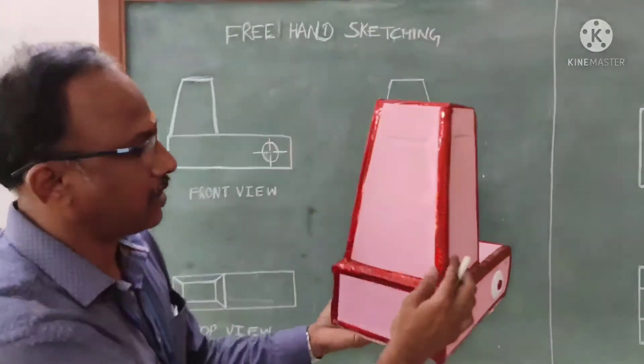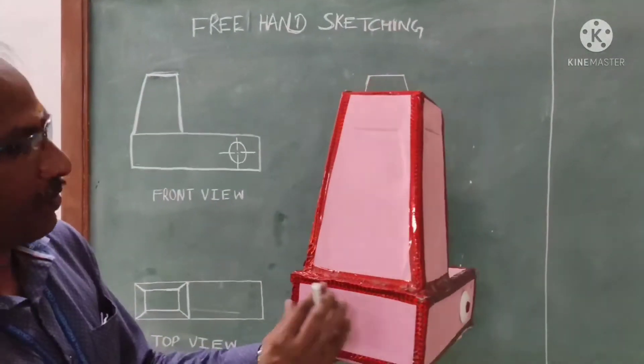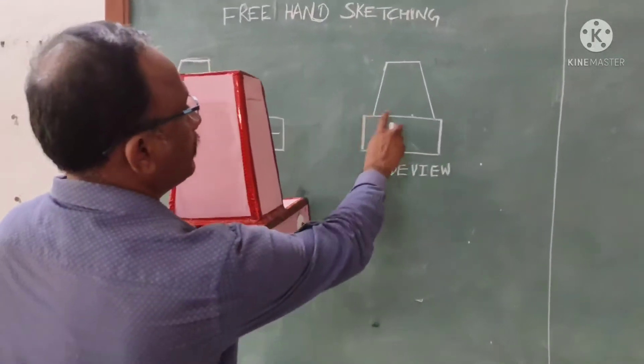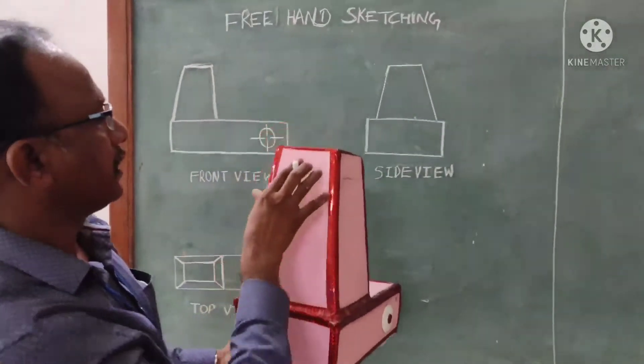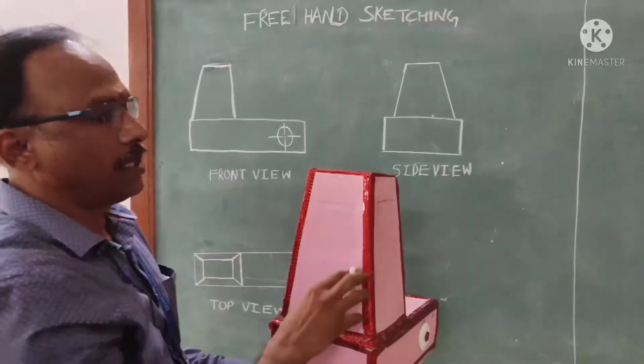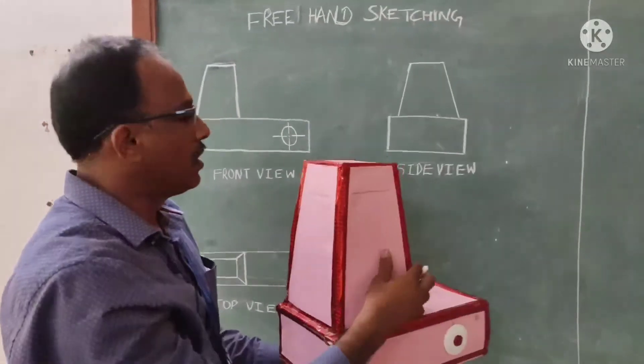Coming to the side view, this is actually the side view for which first draw this bottom rectangle. Then we have this tapered one, this top surface.